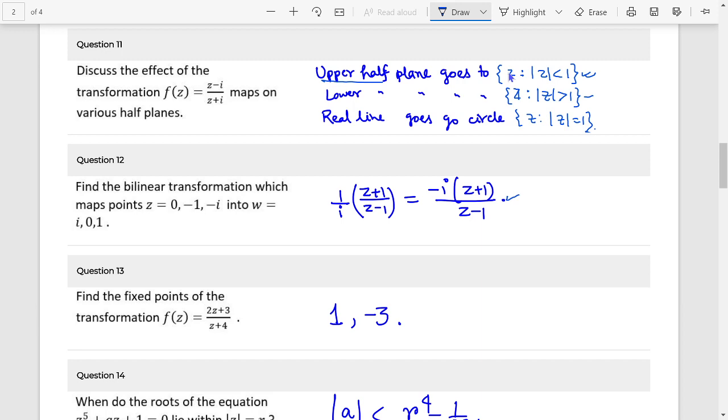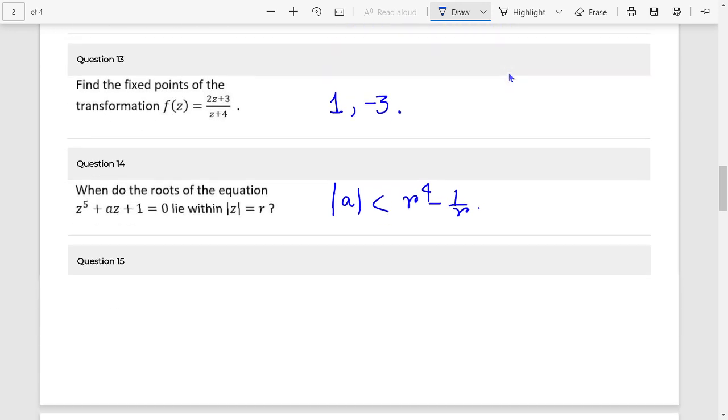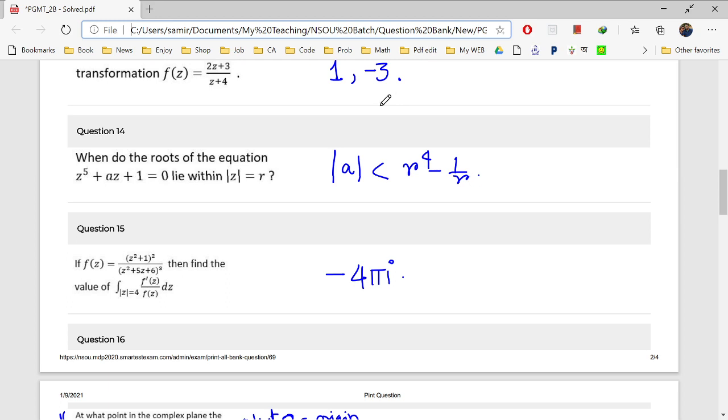Fixed point. So eta equals to z, equals to z. You just find the values, answer will come. 1 and minus 3. 1 and minus 3.